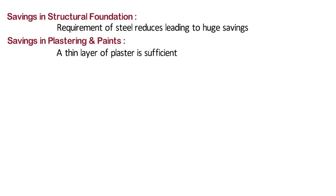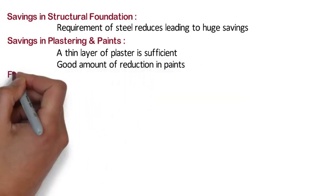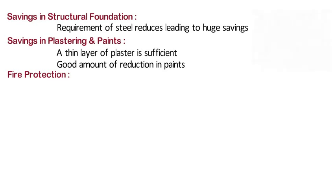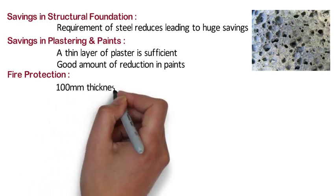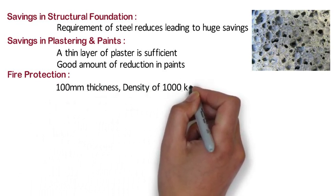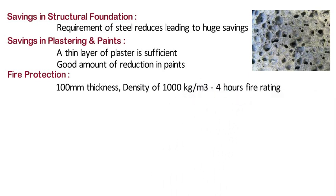Also better finishing of walls offers a good amount of reduction in paint consumption. Fire protection: the air embedded in the CLC is instrumental for high fire rating. With just 100mm thickness of CLC wall with density of 1000 kg per m3, it offers fire endurance for heat transmission for 4 hours without releasing any toxic fumes during the fire. Fire rating of cellular concrete is far superior to that of brickwork or dense concrete.